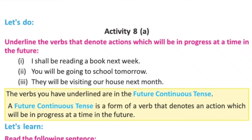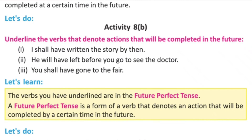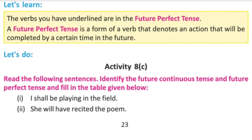Activity 8b: Underline the future perfect tense. Examples: 'I shall have written the story by then' — shall have written. 'He will have left before you go to see the doctor' — will have left. 'You shall have gone to the fair' — shall have gone.